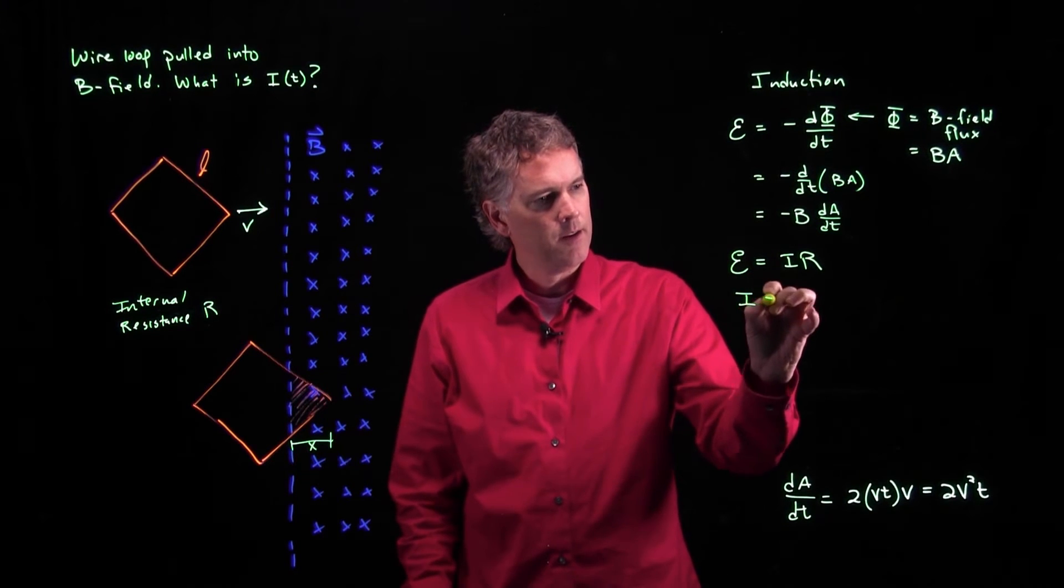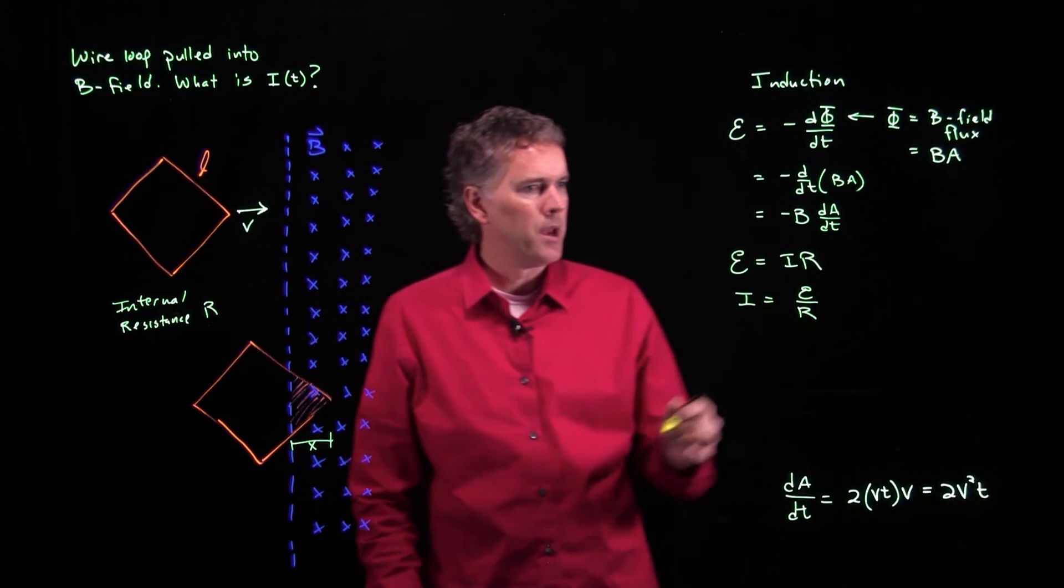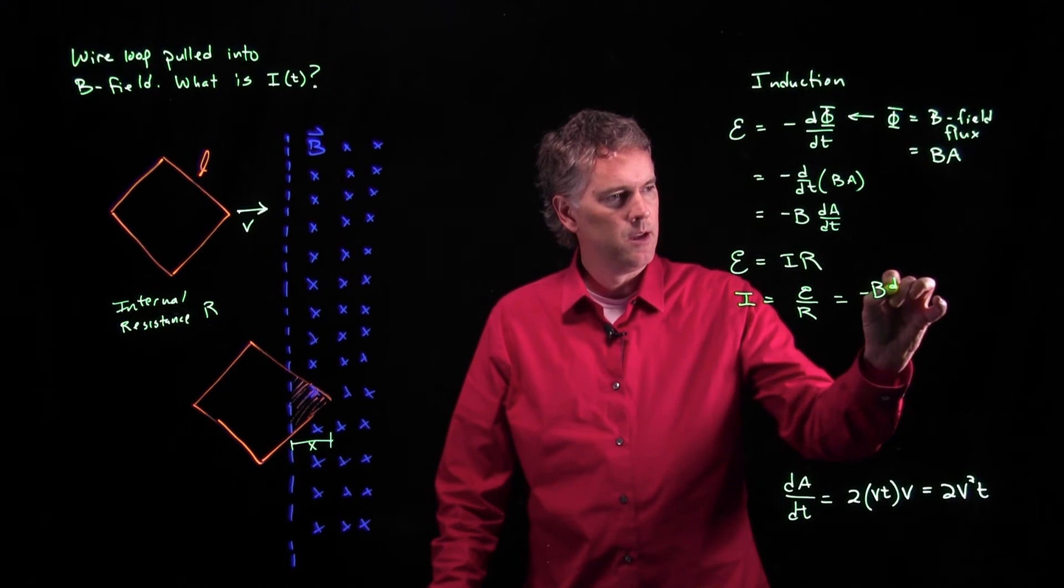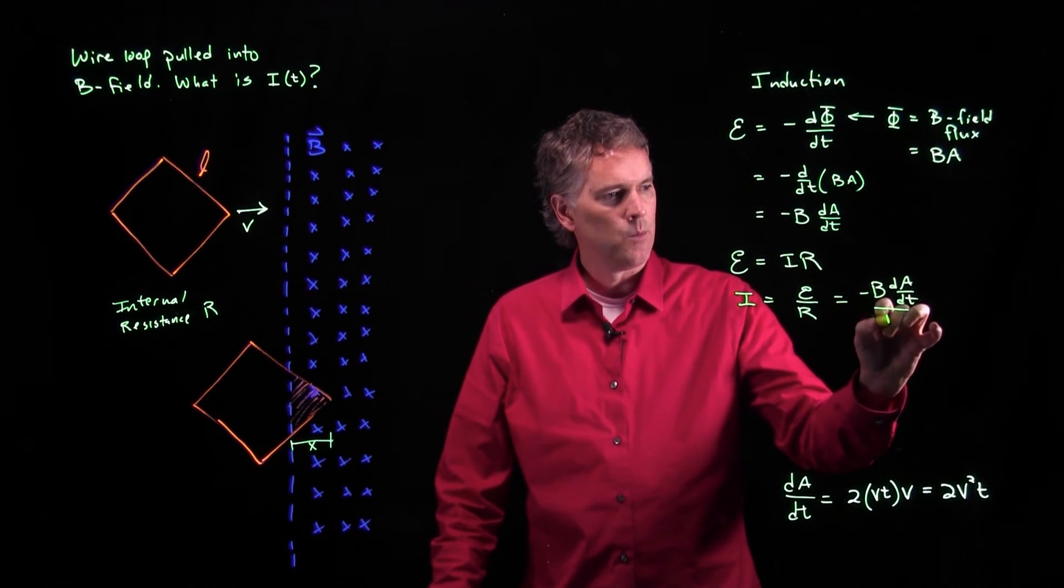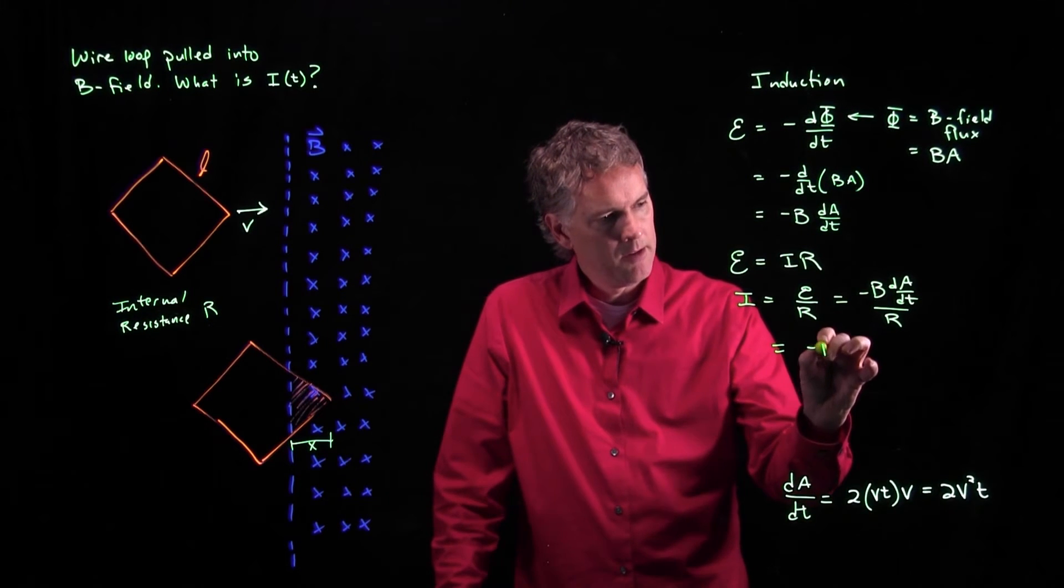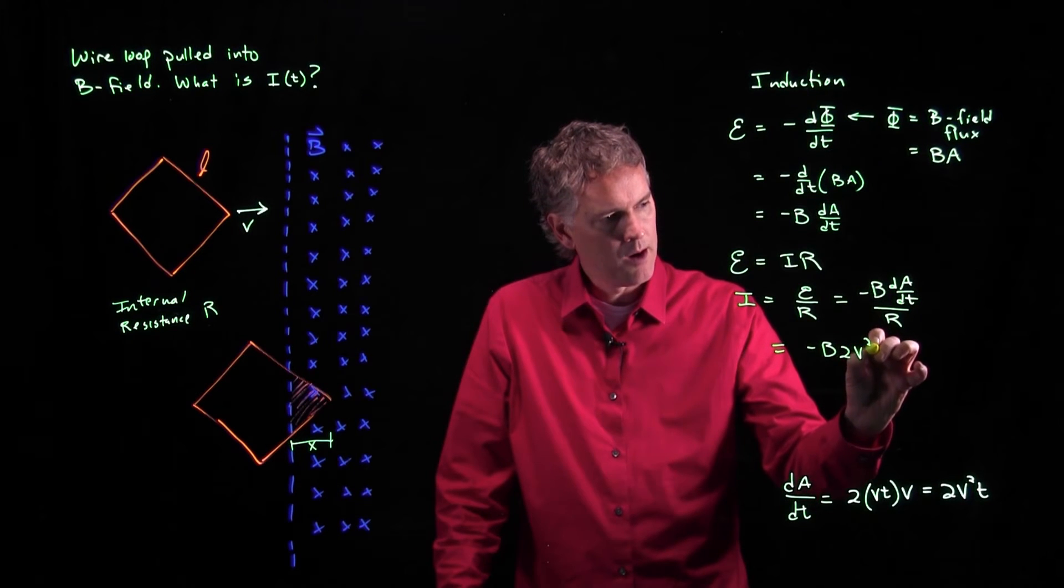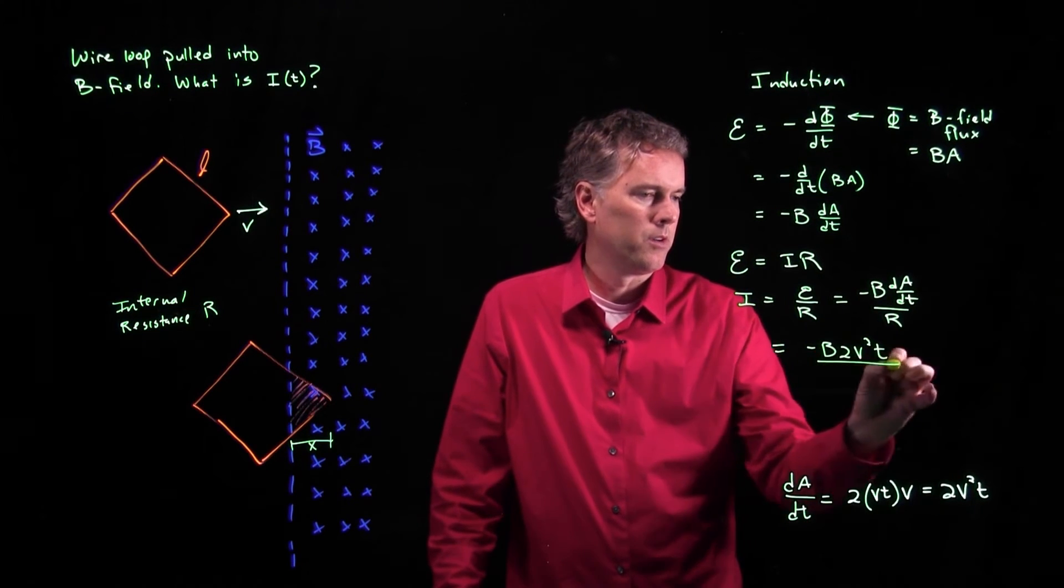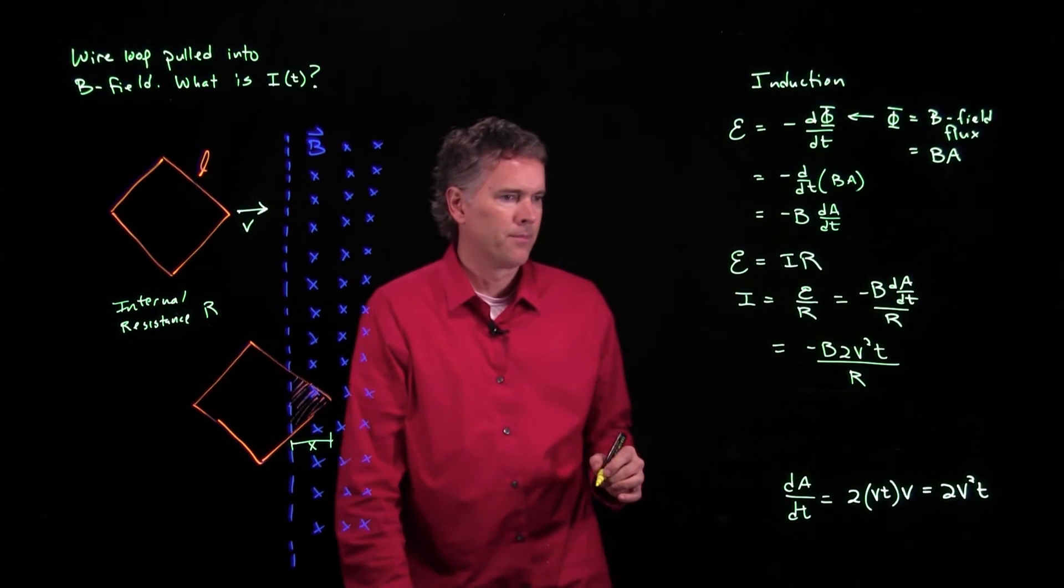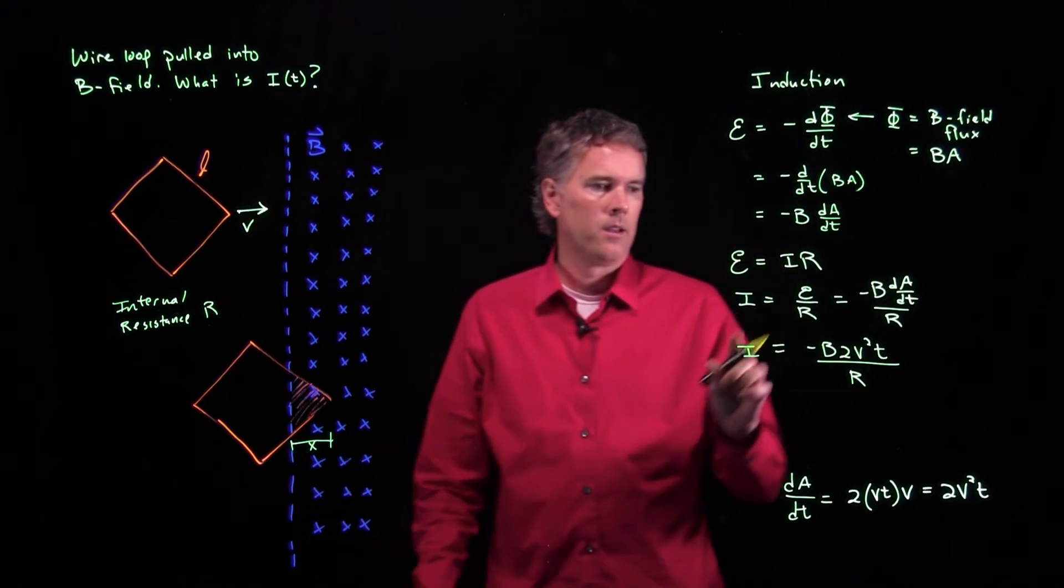We know that the EMF is equal to I times R. So what is I? It is epsilon over R. But now we know what epsilon is. It's negative B dA dt. And we're going to divide by R. And this is our dA dt. So we get negative B times 2 times v squared times t, and we're going to divide by R is the current as a function of time.